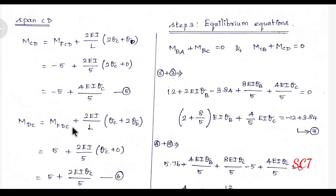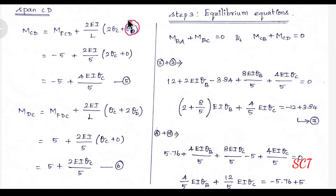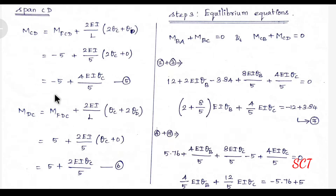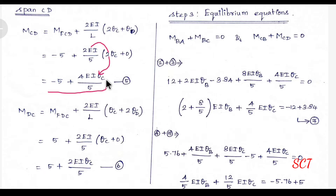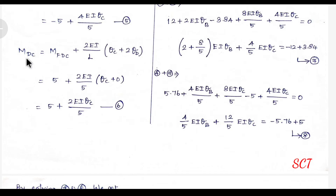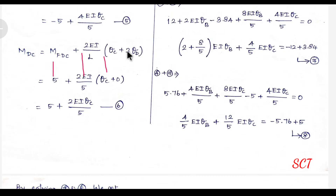Now we get span CD - the last CD support. D is a fixed support, so θD = 0. M_CD equals MF_CD plus (2EI/L)(2θC + θD - 3δ/L). MF_CD value is minus 5, I is 2i. Substituting 2EI/L: 2 into 2 is 4, so 4EI·θC divided by 5, minus 5. This is equation number 5.